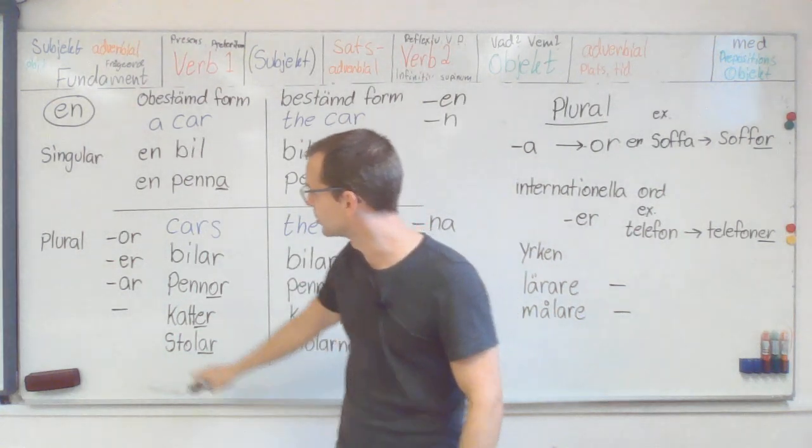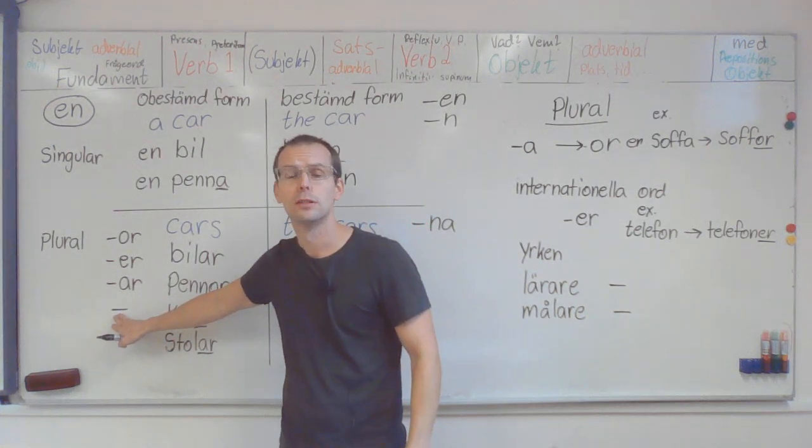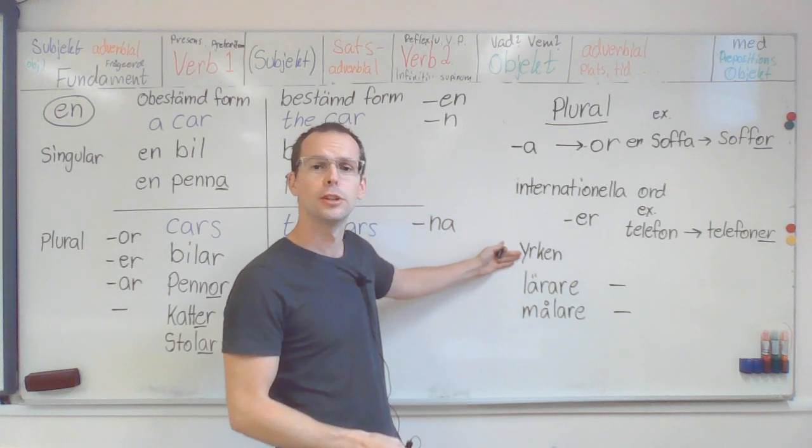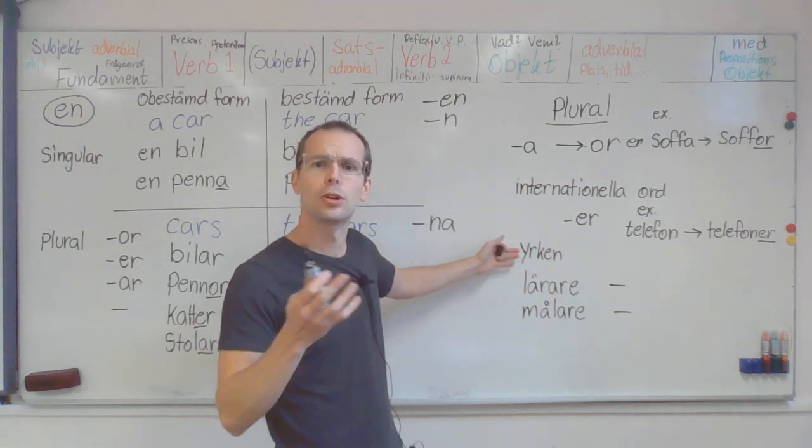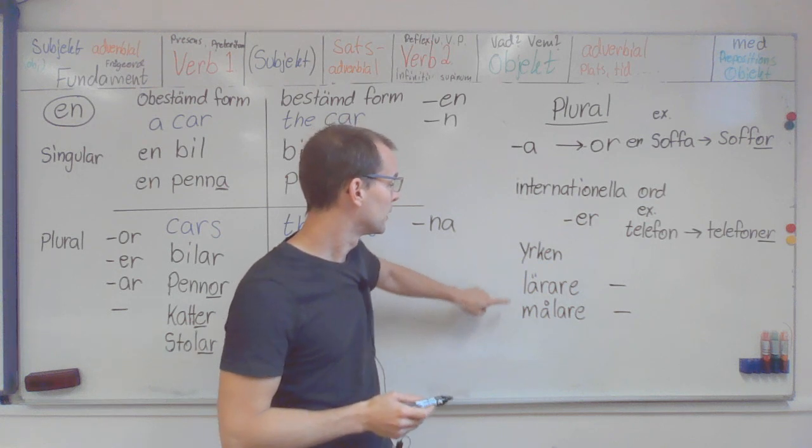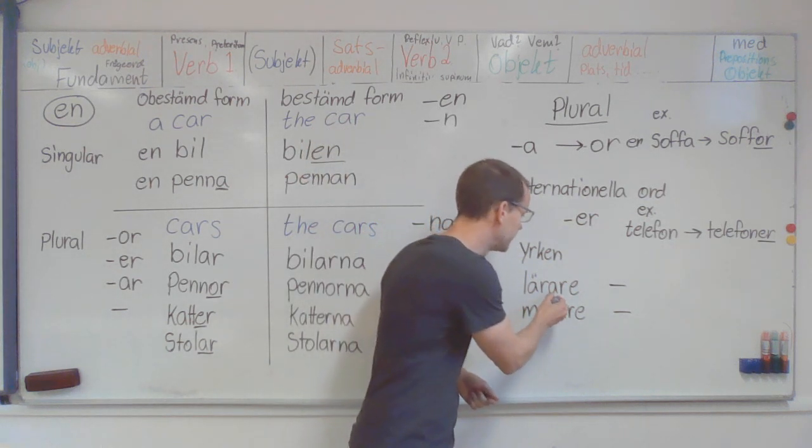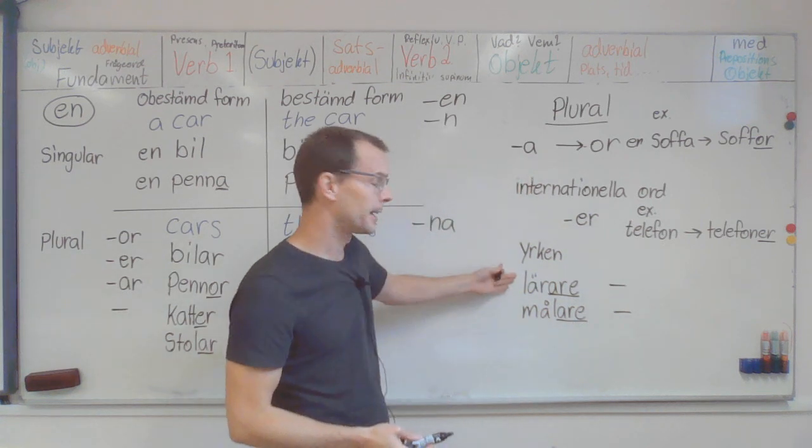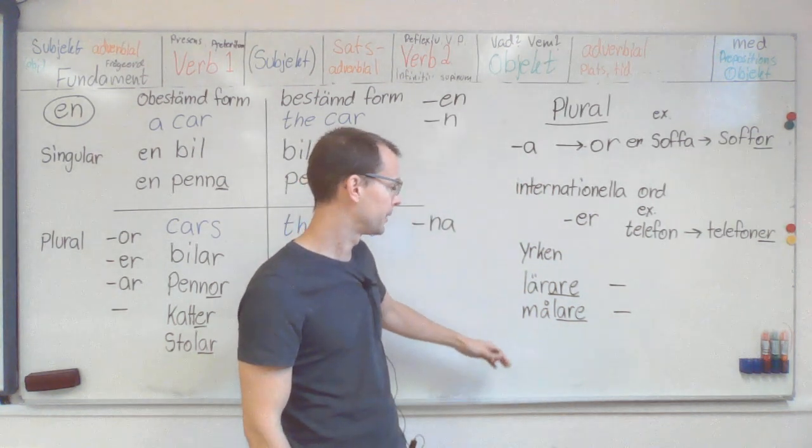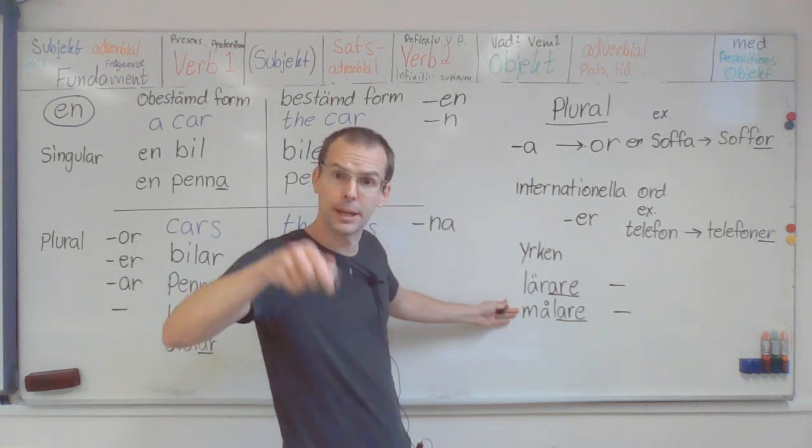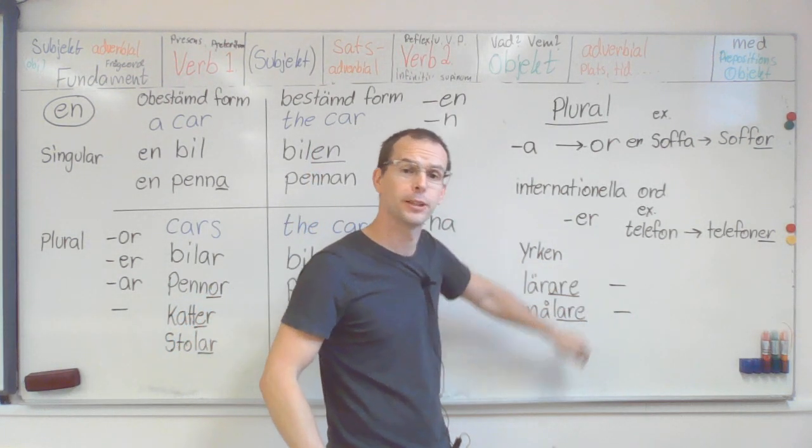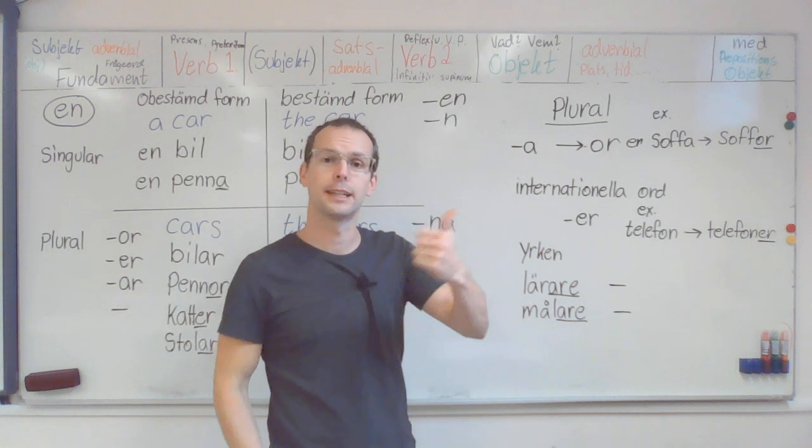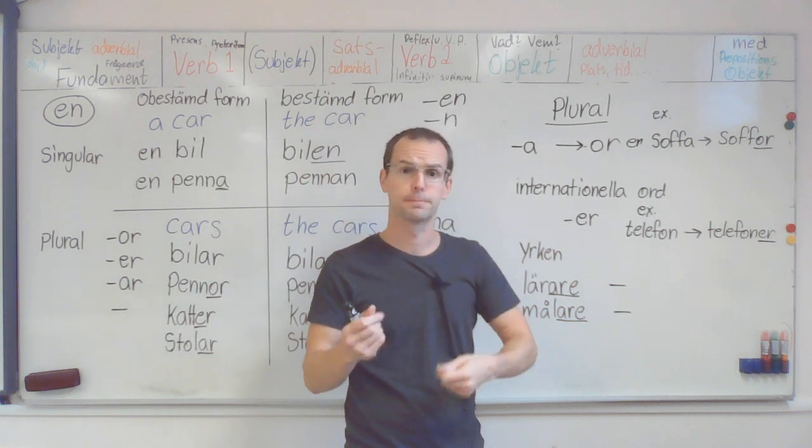And also you can have no suffix, which for example, when you talk about yrken, occupations. And occupations that end with arre. So, lärare, teacher, or målare, painter. They have no suffix. They are the same. Singular. Plural. En lärare. Två lärare. The same.